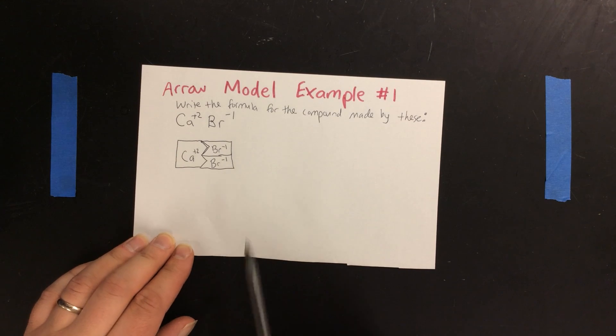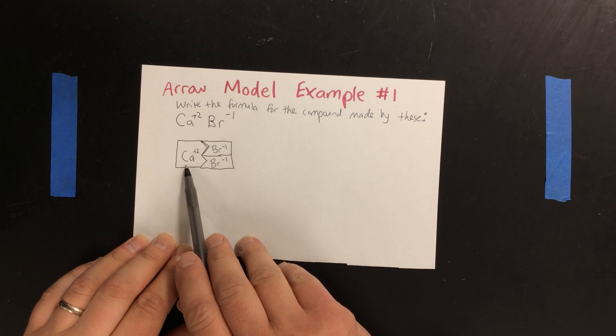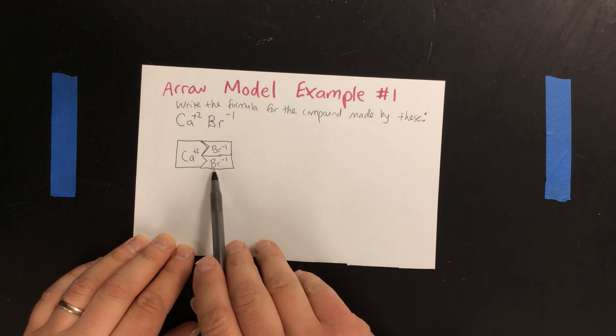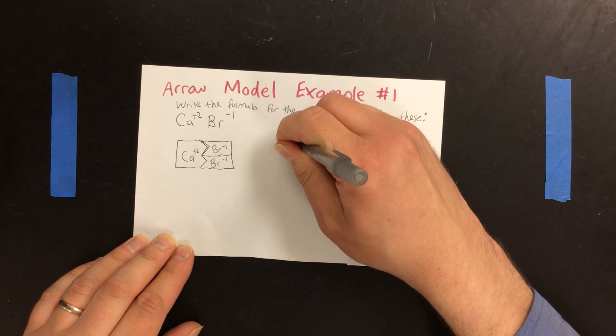To write the formula, we count how many atoms of each kind we have. I have one calcium atom and two bromine atoms. For the calcium, I just put Ca.